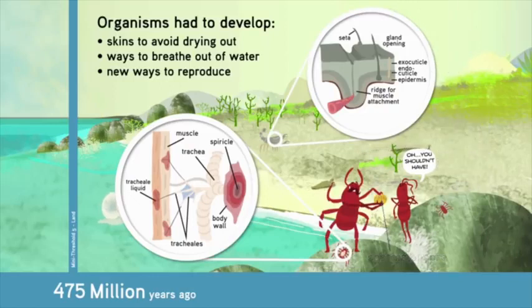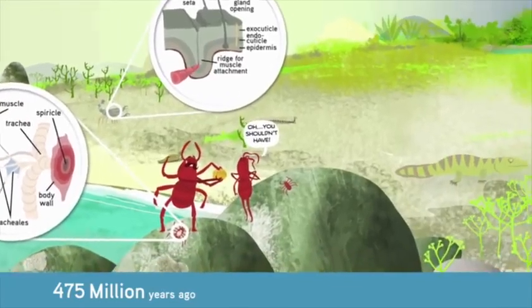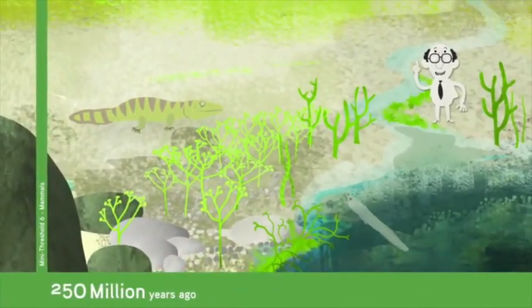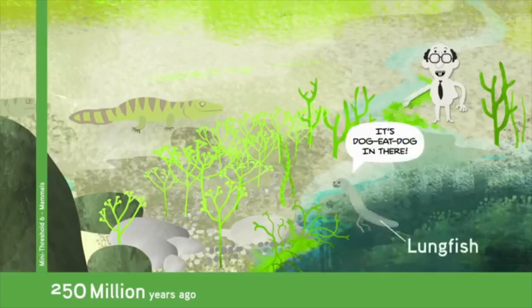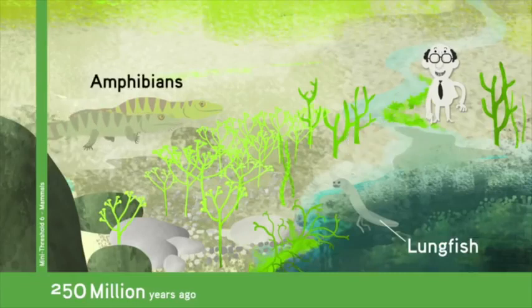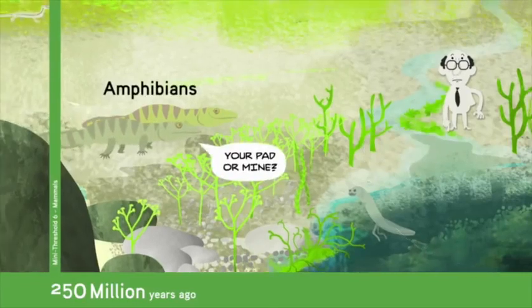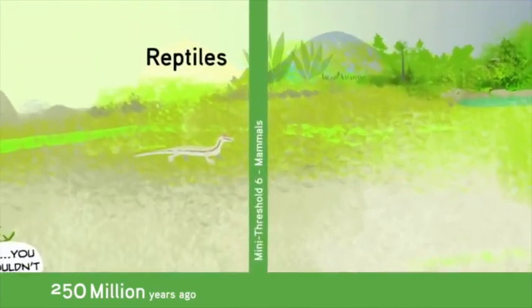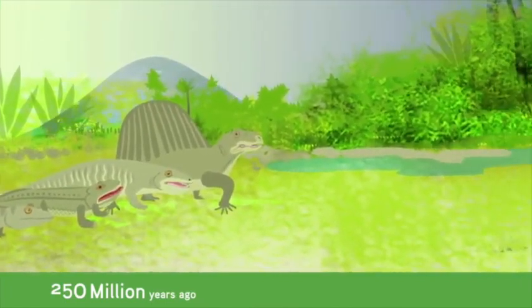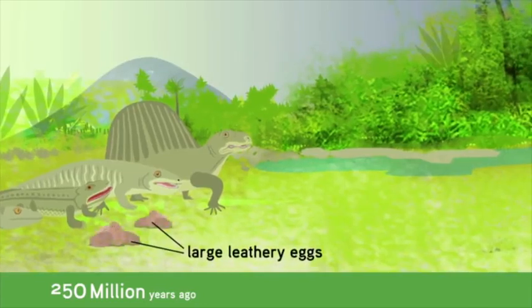Mammals, the forerunners of you and me, account for mini-threshold number 6. The first animal to live on land may have been like a modern lungfish. But other land animals soon evolved, such as amphibians. But these still needed to return to the water to reproduce. Then came reptiles, like crocodiles or dinosaurs. These developed large, leathery eggs that could survive well away from water.